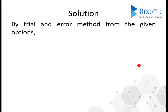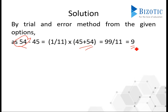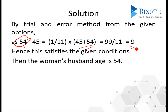If we consider option A, 45, as the woman's age, reversing it gives the husband's age as 54 — which is greater, so he is older. Now 54 minus 45 equals 9. The given condition is 1/11th of the sum of their ages: 99 divided by 11 equals 9. This exactly satisfies the condition, so the husband's age is 54, which is option D.